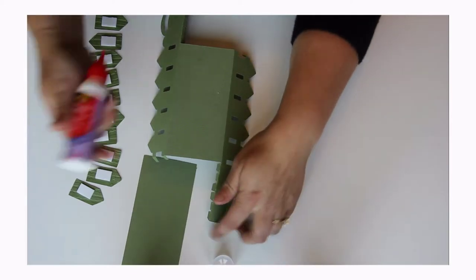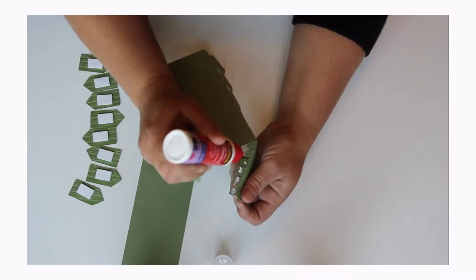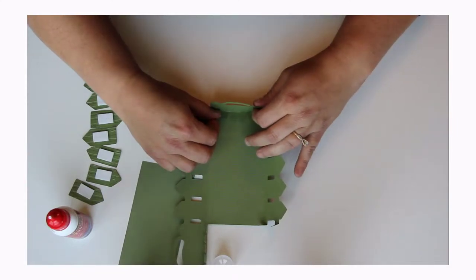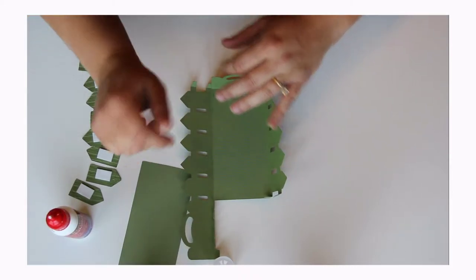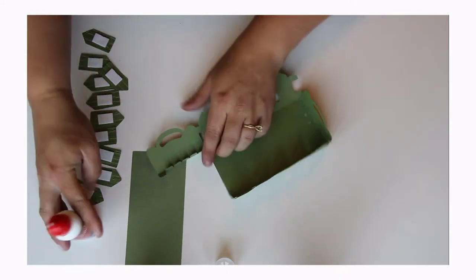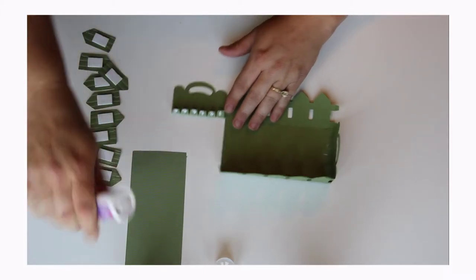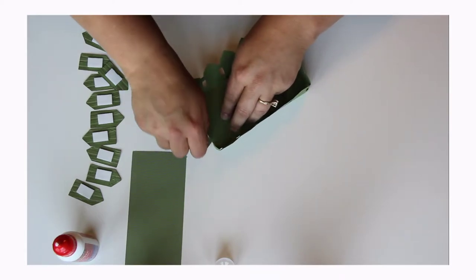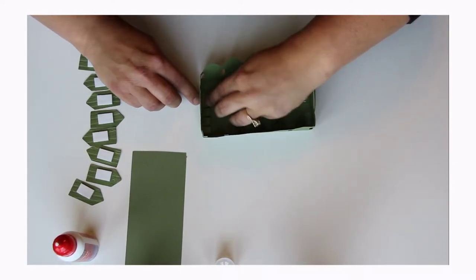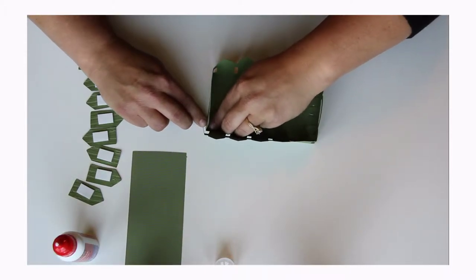We're going to start by getting our glue. I use the Scotch Quick Dry Adhesive. We're going to put glue on each of these tabs here. You're going to just glue them down right like that. Now we're going to do that for the other side. We're going to glue it right down there. Make sure you're lining your edges up perfectly. That way everything fits the way it's meant to.